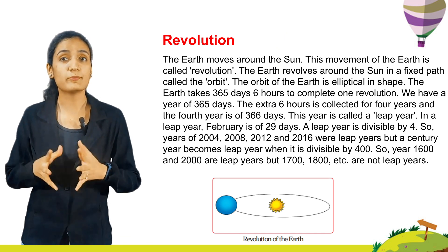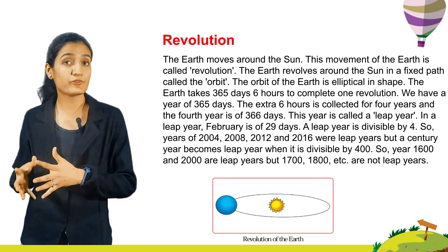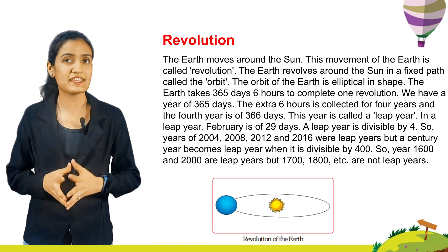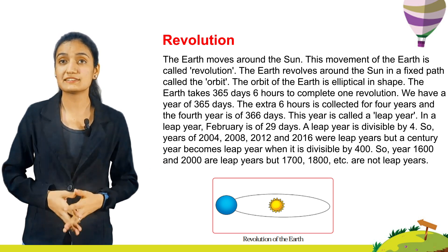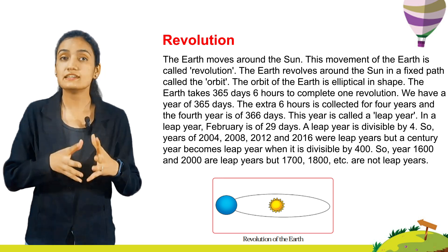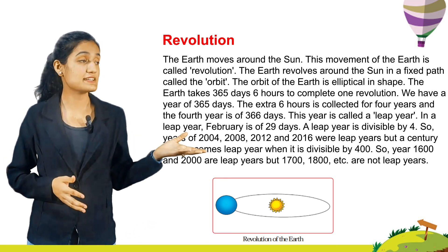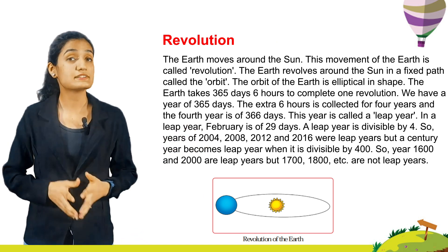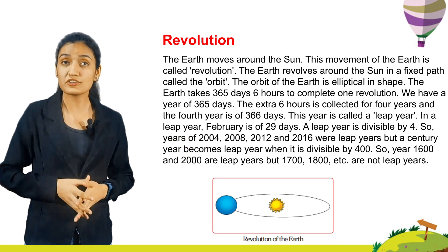In a leap year, February is of 29 days. A leap year is divisible by 4. So years 2004, 2008, 2012, and 2016 were leap years. But a century year becomes a leap year only when it is divisible by 400. So years 1600 and 2000 are leap years, but 1700, 1800, etc. are not leap years.